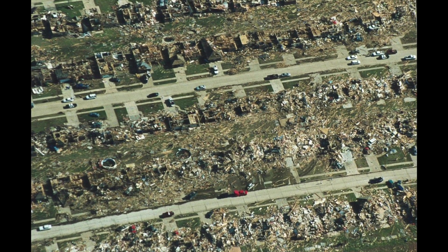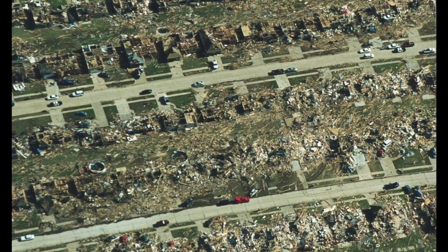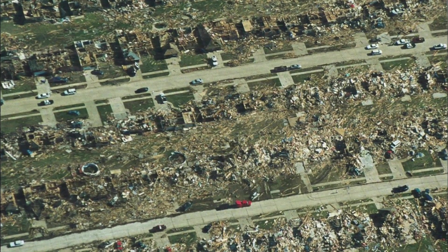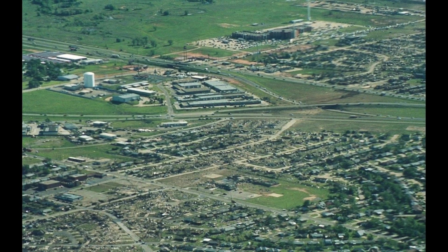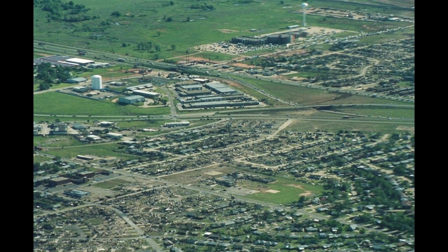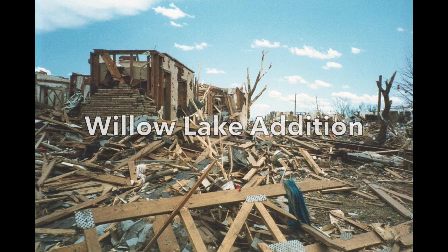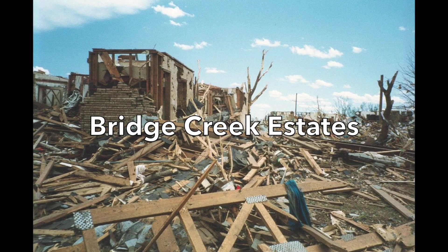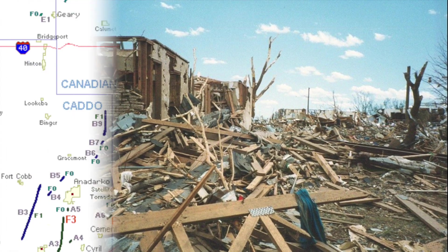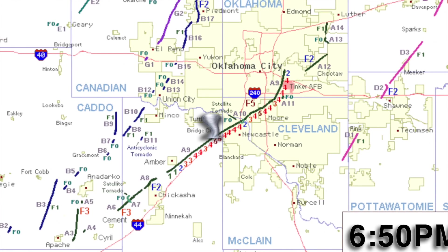Approximately 200 mobile homes and houses were destroyed and hundreds of other structures were damaged. Twelve people died in Bridge Creek, nine in mobile homes. All fatalities and the majority of injuries were concentrated in the Willow Lake Addition, Southern Hills Addition, and Bridge Creek Estates, which consisted mostly of mobile homes. Compared to sections of Oklahoma and Cleveland counties also in the path, eastern Grady County, including the Bridge Creek area, was rural and sparsely populated.